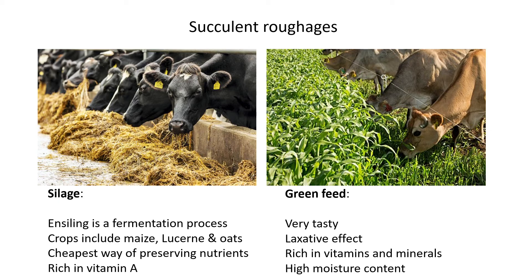In the picture, cattle are shown eating silage — it still looks like hay but is wetter than normal hay and is partially digested due to the fermentation by bacteria. Crops used for silage include maize, lucerne, and oats. It's also the cheapest way of preserving nutrients. Silage is often made in summer — cut, baled, and wrapped — then fed to animals in winter to preserve protein, carbohydrates, and other nutrients.